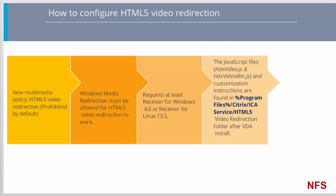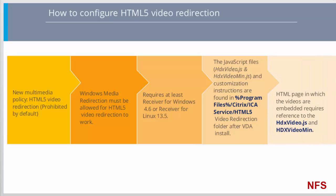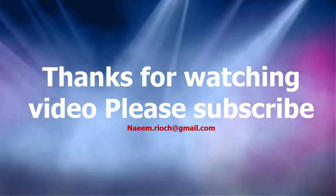The JavaScript files hdxvideo.js and hdxvideomin.js are found in the Program Files folder after installing the VDA software. Customization instructions are also in this location. In short, configuration involves taking the supplied JavaScript files and copying them to a web server, then adding the reference to the location of hdxvideo.js and hdxvideomin.js in the HTML page where the videos are embedded. The reference needs to be ahead of any other JavaScripts or JavaScript references.